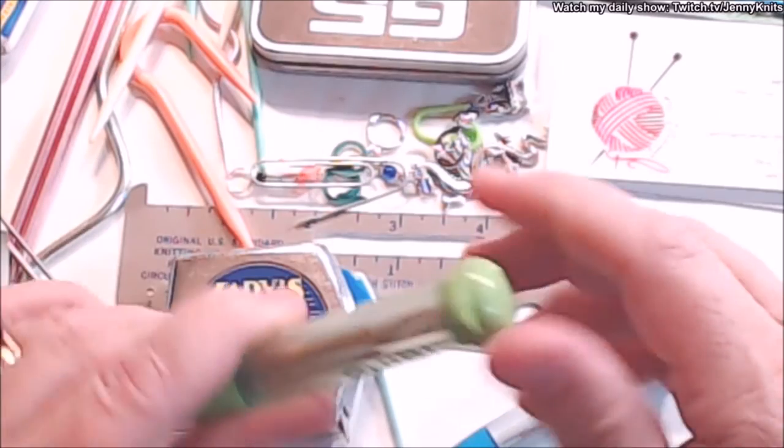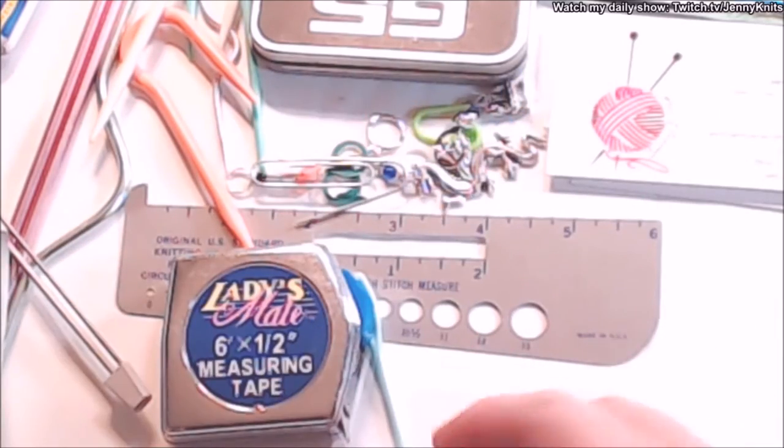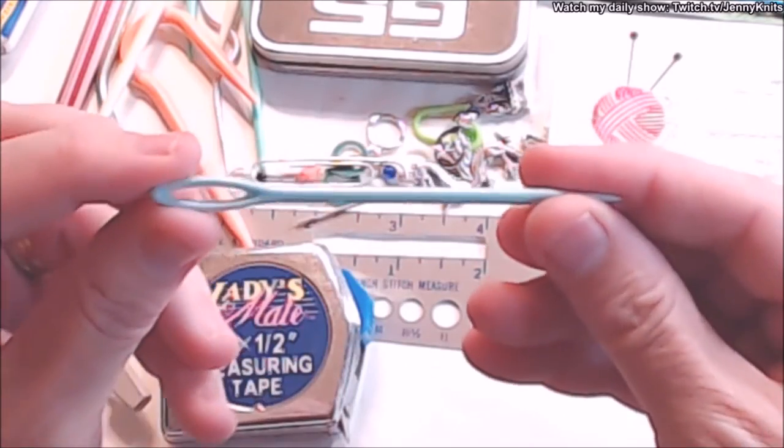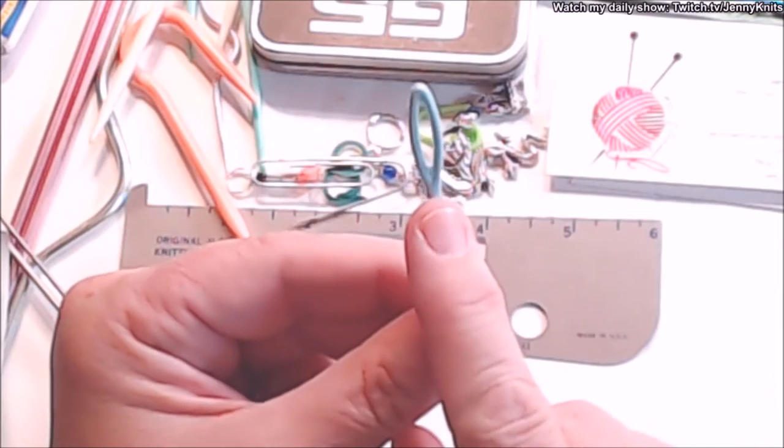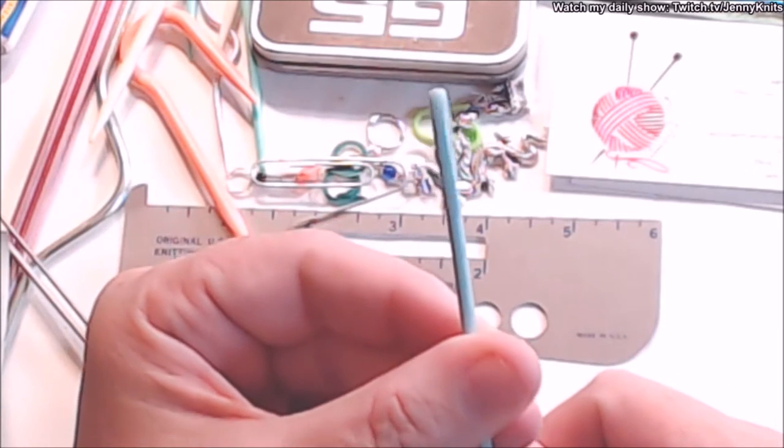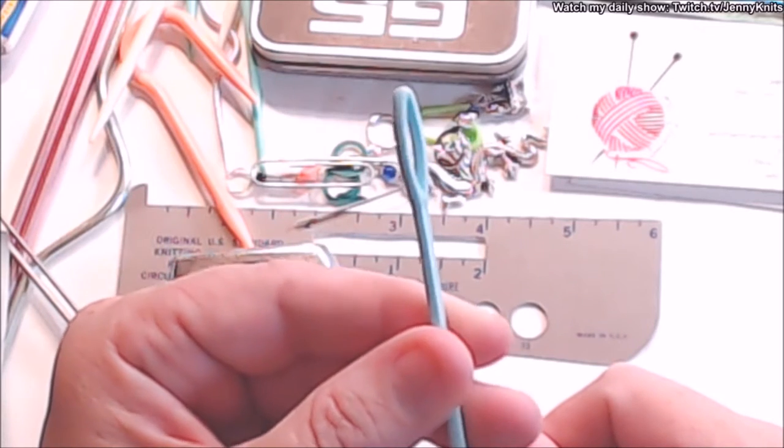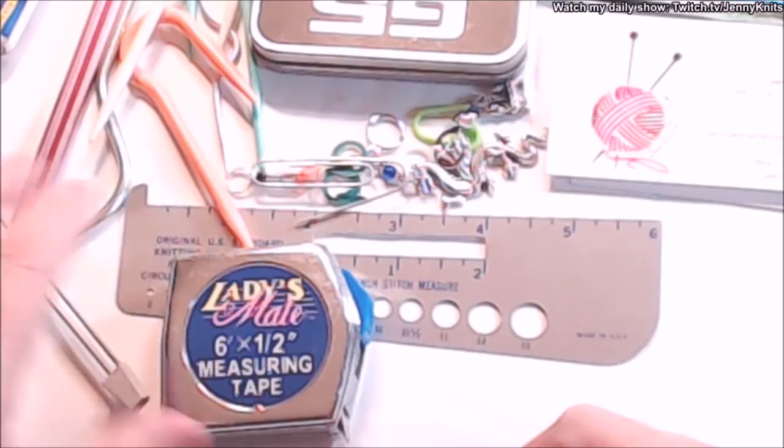This needle was too big to fit into that little tube but it's a great needle to have - plastic with a super huge eye so I can put thicker than worsted weight yarn through that eye. So I keep that on hand.